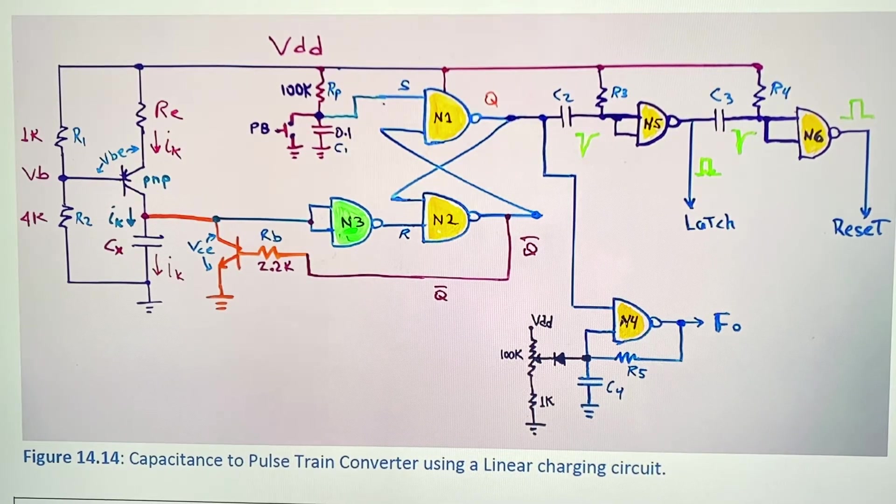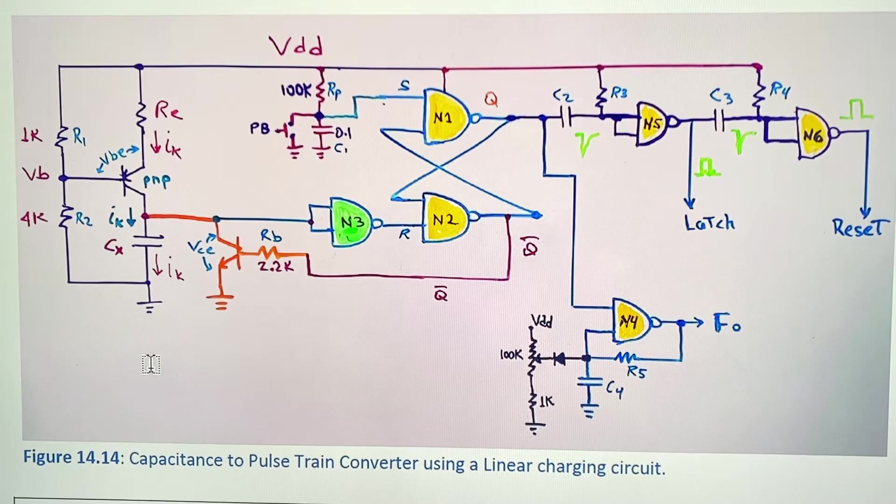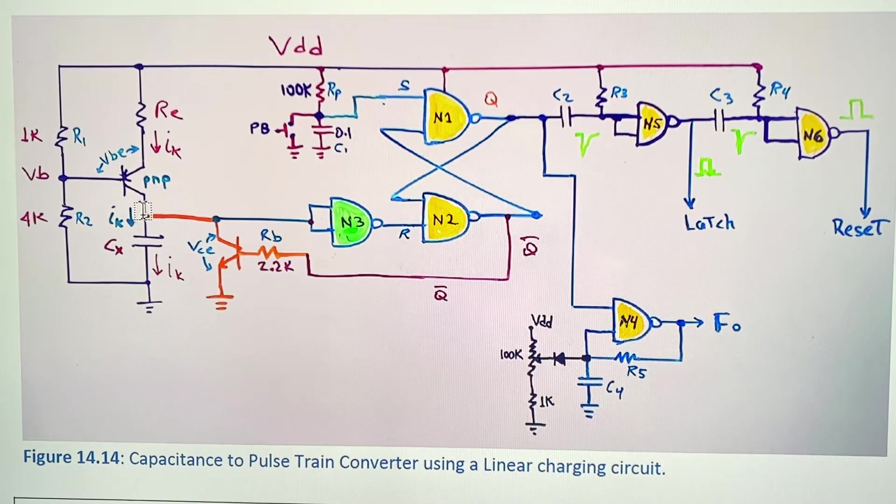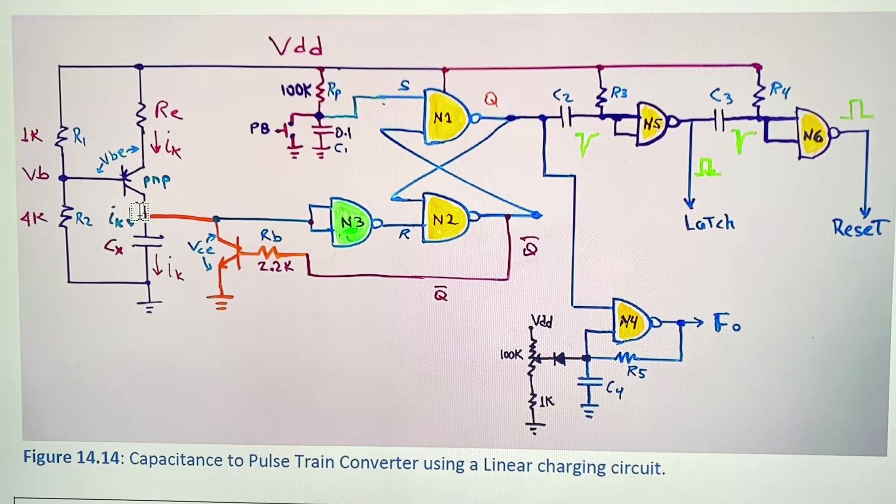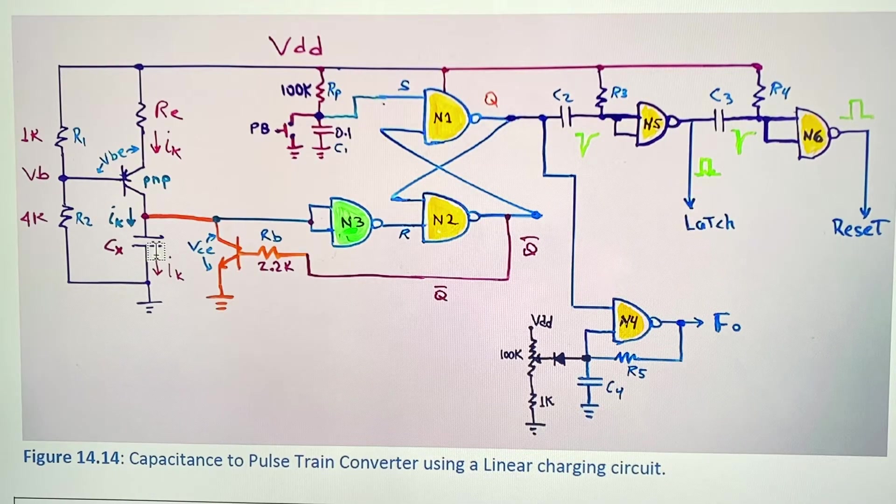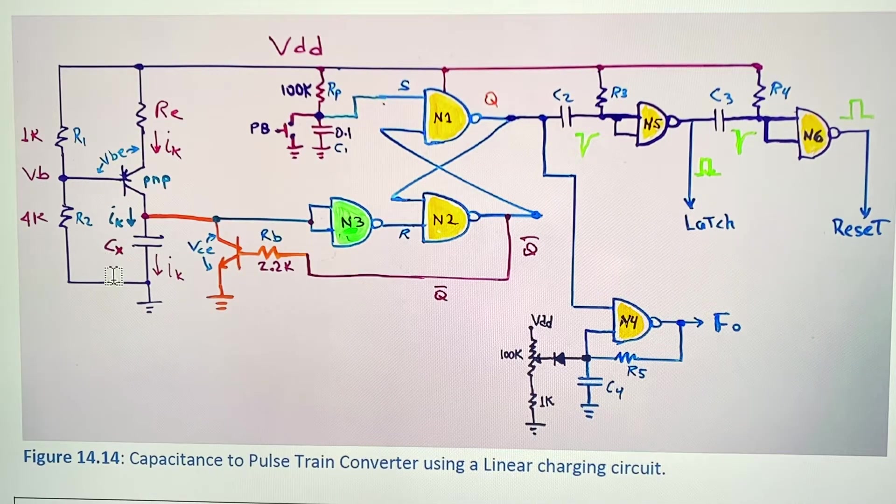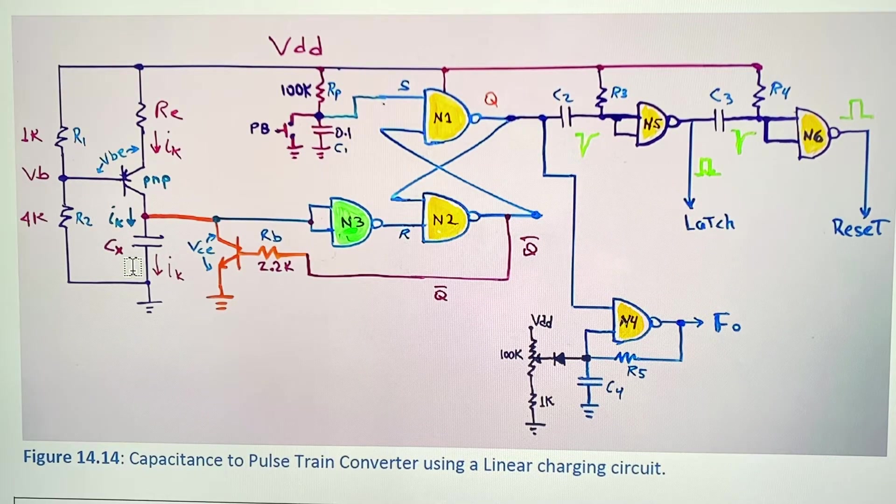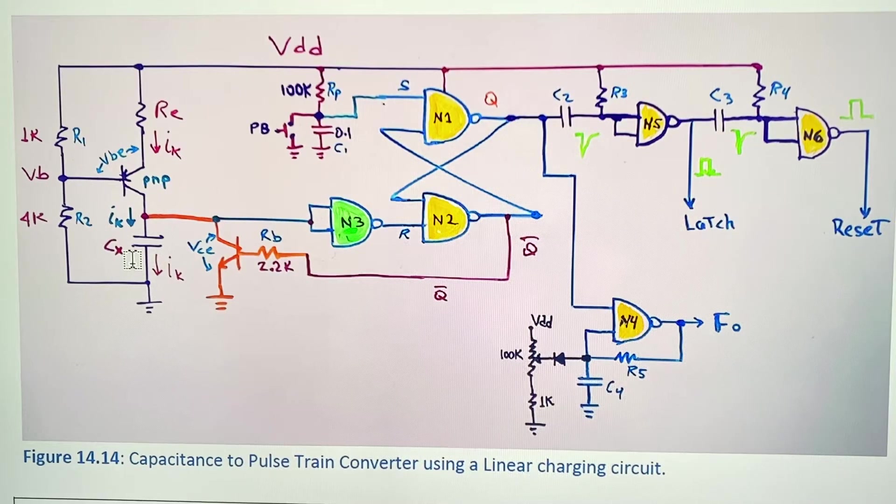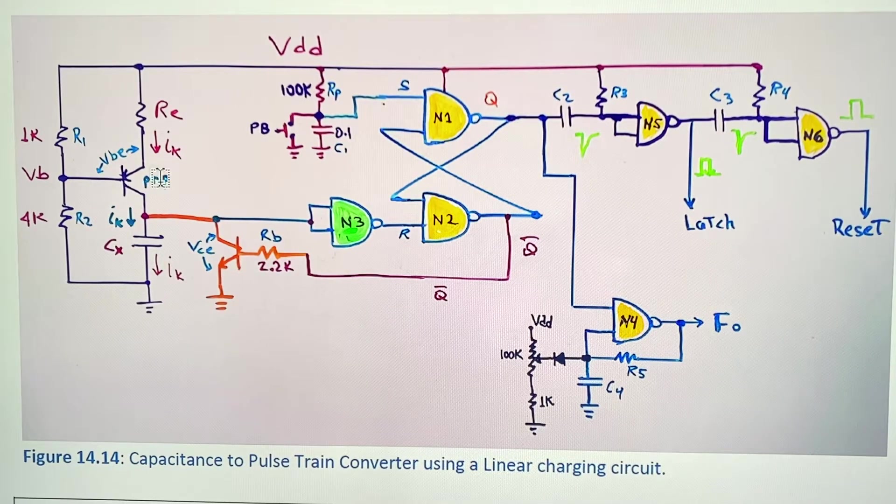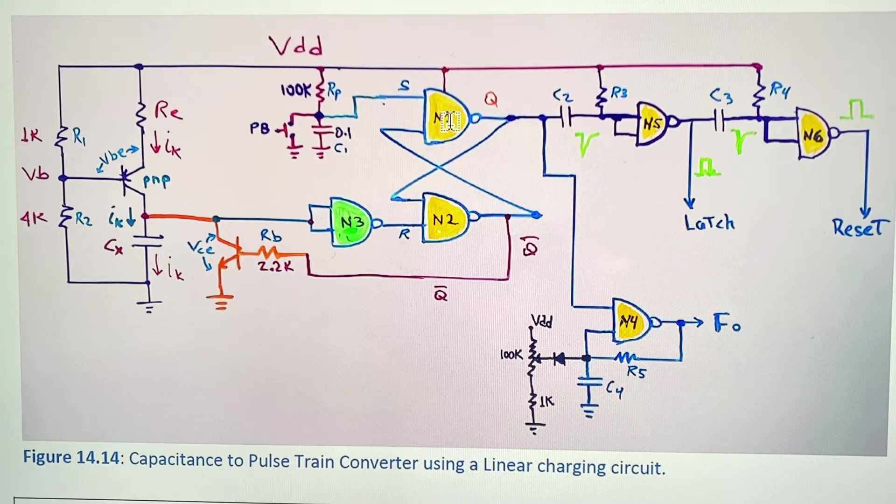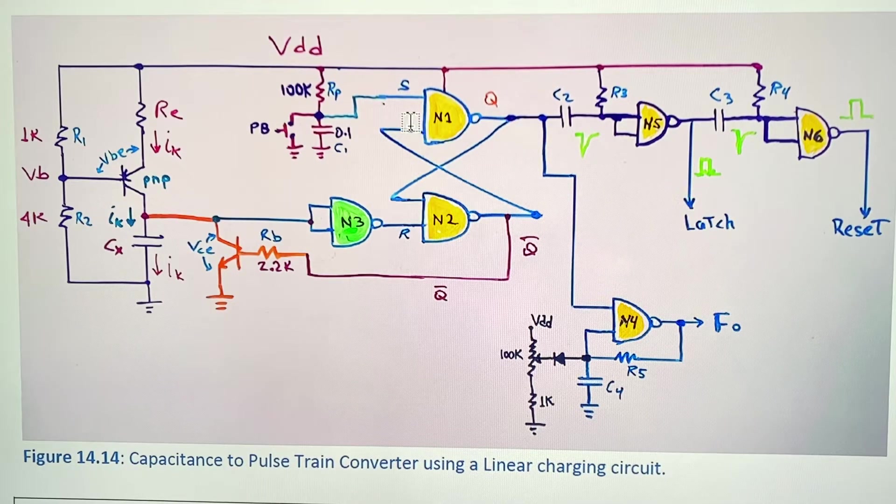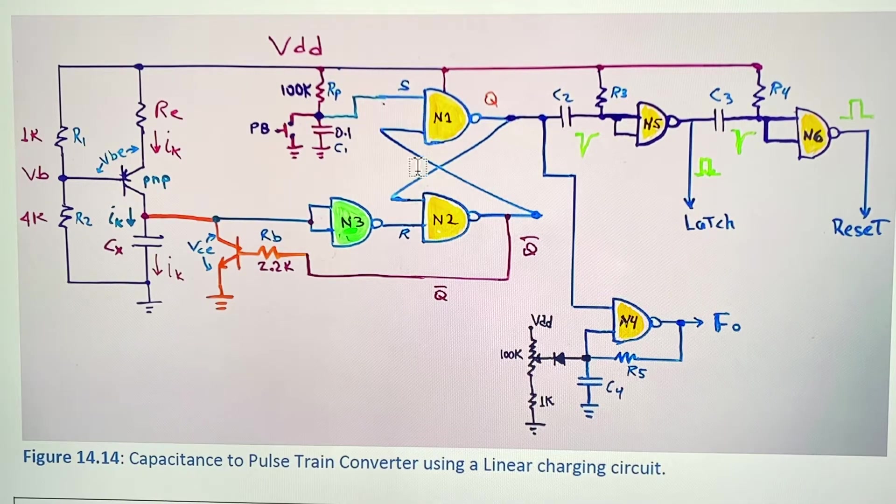In this circuit we are using a constant current source to send that current to this capacitive transducer CX. In another video we saw the constant current generator using the flip-flop or the set-reset latch made of NAND gates.